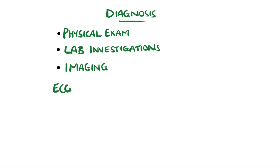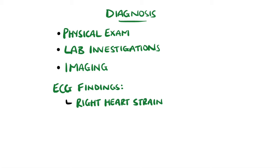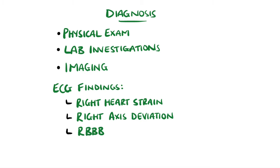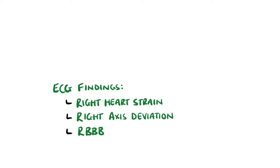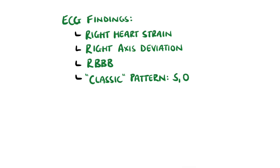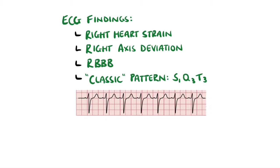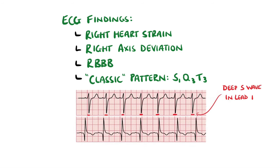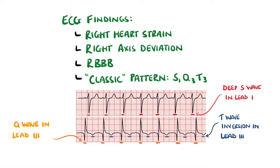An ECG is useful in helping to rule out a myocardial infarction as a cause of chest pain, but it can also suggest pulmonary embolism. Strain of the right side of the heart is the main finding, but it can also present with right axis deviation and a right bundle branch block. The classic ECG findings of pulmonary embolism are a large S-wave in lead 1, a large Q-wave in lead 3, and T-wave inversions in lead 3, known as the S1Q3T3 pattern.